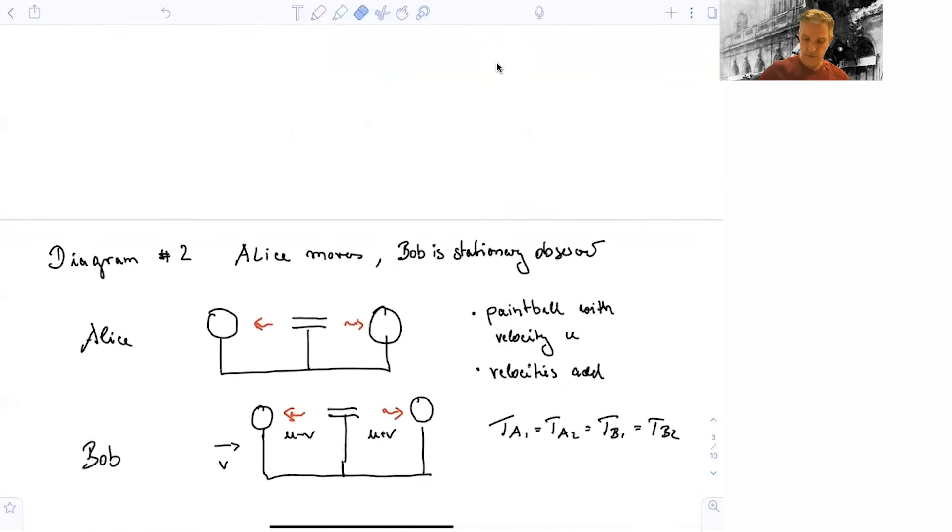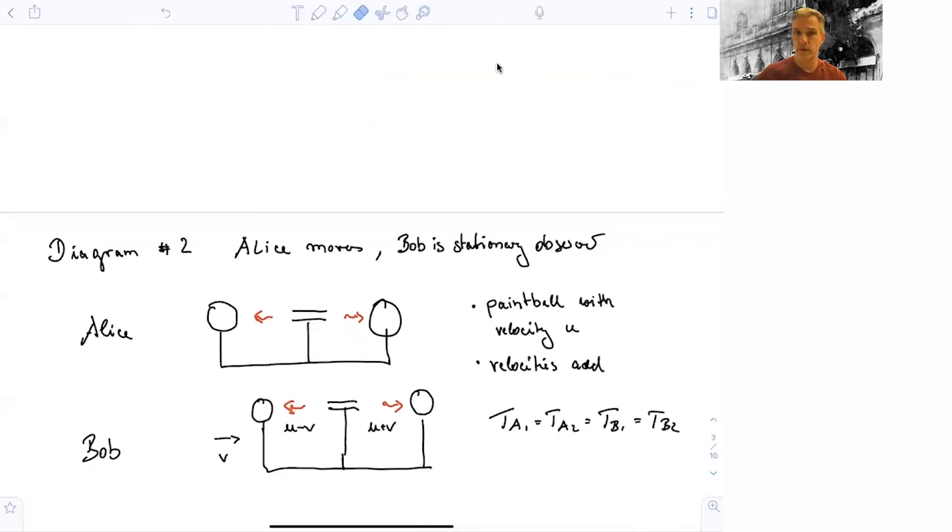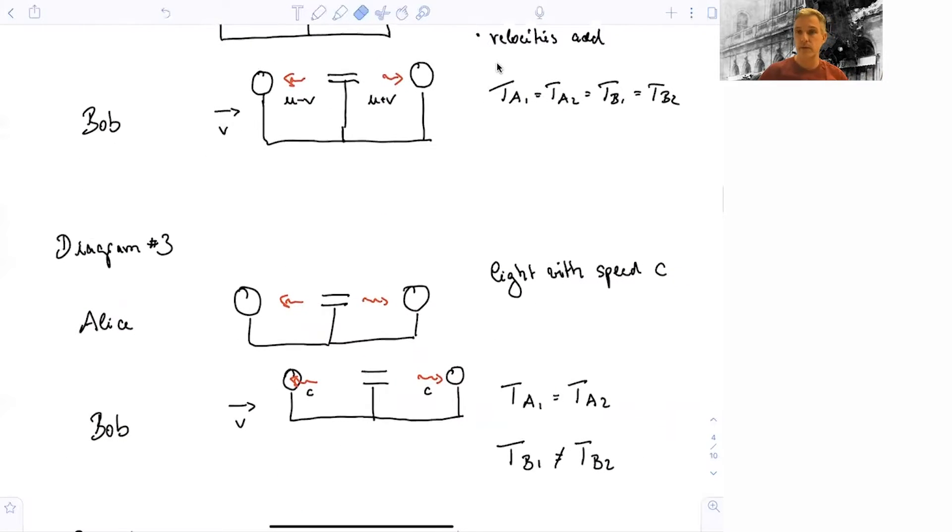Now we go in the second situation where we use the same device but with a paintball. So now Alice moves and Bob is observing her. She moves with a relative velocity v and shoots off the paintballs with a velocity u. The velocities will add, meaning that the clocks are initially synchronized. So there is a small t a equals small t b equals zero. Once the clock hits, you can hopefully agree that Alice and Bob will agree that the times when the left clock and the right clock hit are the same.